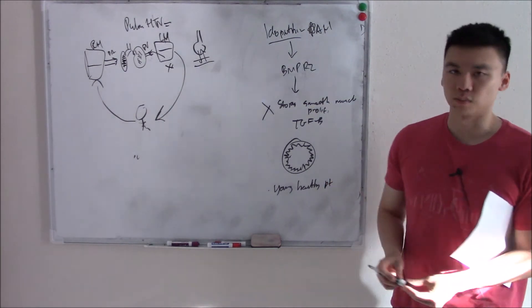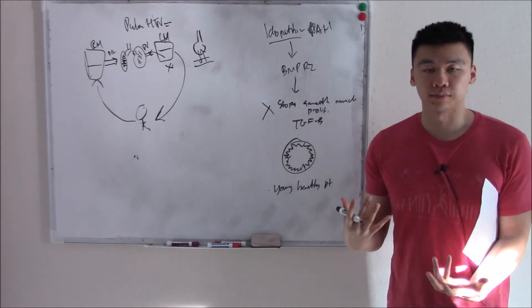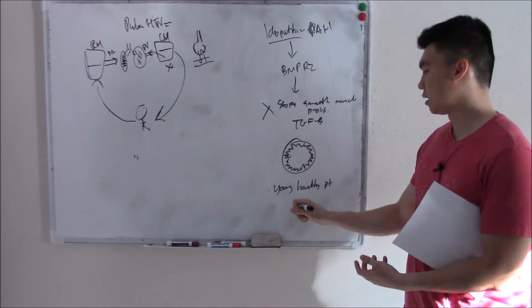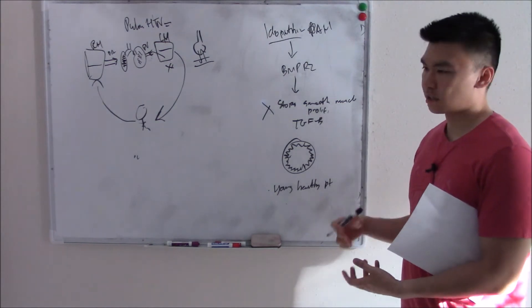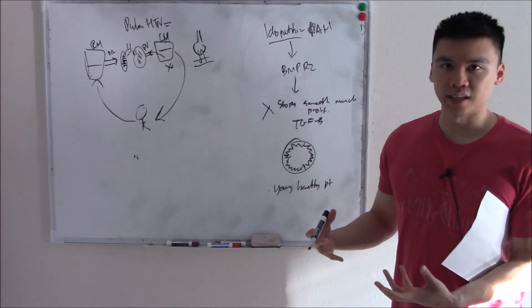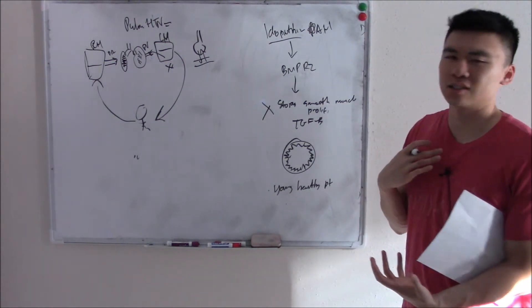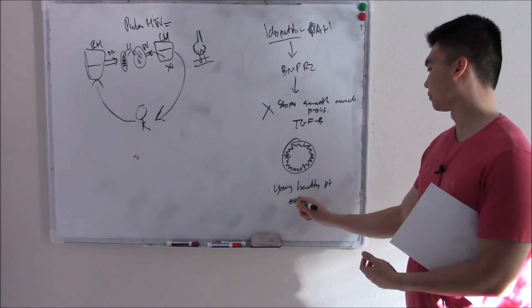Because it's a genetic thing, you're going to see it in a young, healthy patient. It doesn't matter if you have lung pathology or not — it's going to show up regardless. So suspect this in a young, healthy patient with signs of pulmonary hypertension, like exertional dyspnea — they're getting short of breath when exercising while their peers are fine.